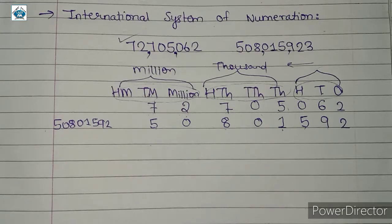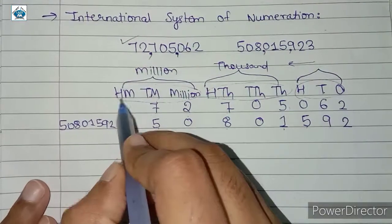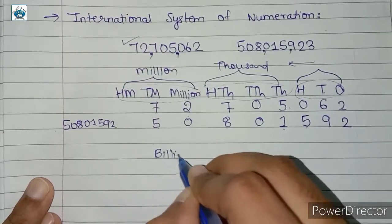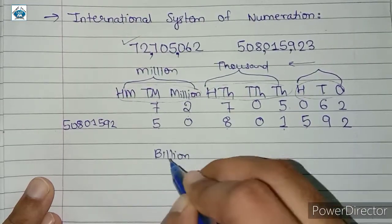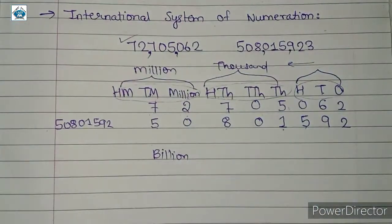An interesting fact: to express numbers larger than a million, a billion is used in the international system of numeration. So after million, we have billion in the international system.